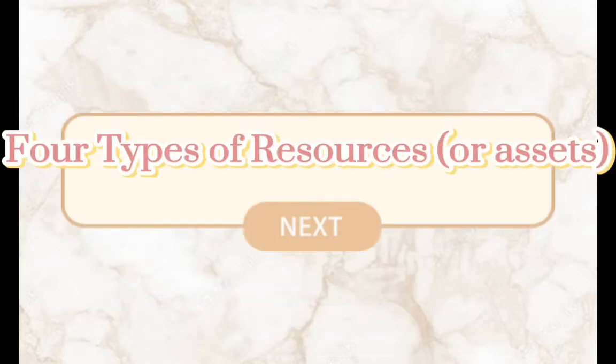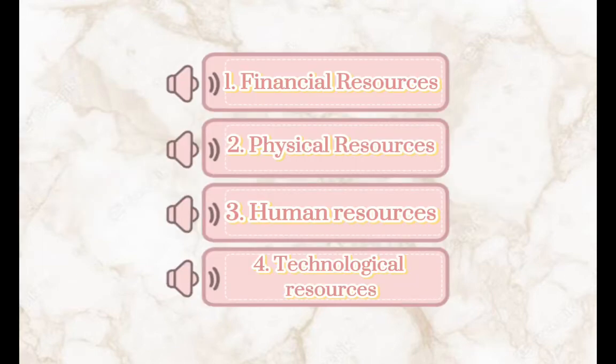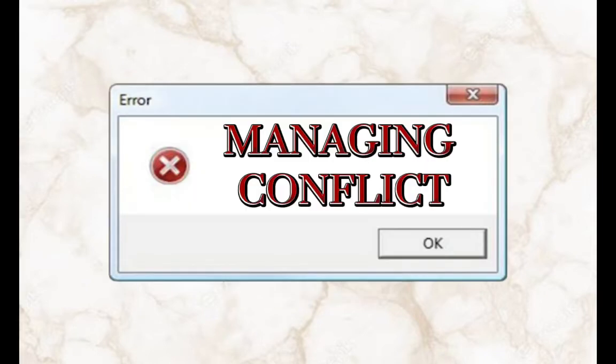Four types of resources or assets. One: financial resources. Two: physical resources. Three: human resources. Four: technological resources.